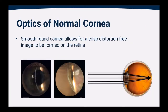Before we start, we need to understand the optics of a normal cornea. In a normal eye, the cornea is the front surface of the eye that allows for refracting of light, or bending of light, to be able to create a crisp, distortion-free image on the retina. If we take a look at the image below, we see all the light rays coming into the eye, hitting the cornea, and then bending to a single focal point on the retina.